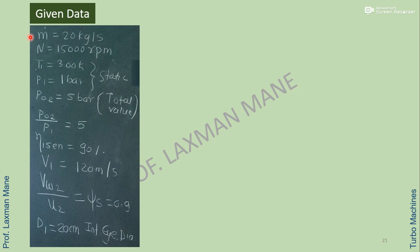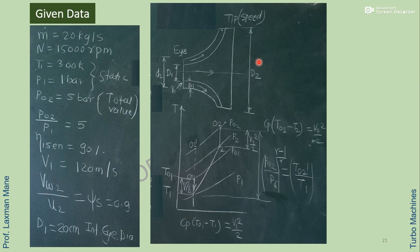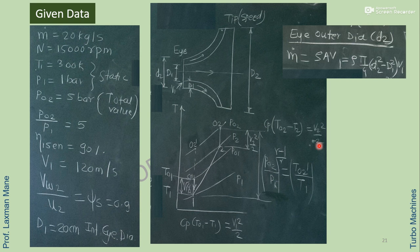Writing the given values: mass flow rate, speed, static temperature and pressure at inlet, total pressure at outlet, total pressure ratio, isentropic efficiency, velocity at inlet, slip factor, and diameter at inlet in cm. In the diagram, capital D1 is the inlet diameter of the eye and small d2 is the outer diameter of the eye. Capital D2 is the tip diameter of the impeller. Small d2 can be calculated using the formula for mass flow rate: rho into area into V1, where area is pi by 4 into (d2 square minus D1 square).